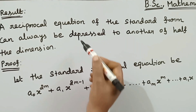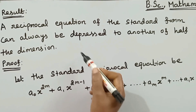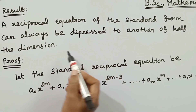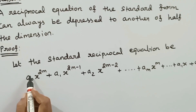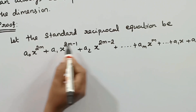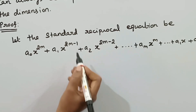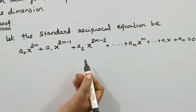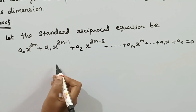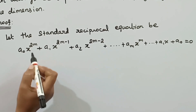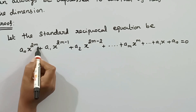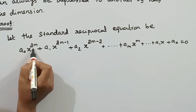The given equation is of degree 2m, and we will show the degree reduces to m — that is, half. We will now discuss and prove this statement for a standard reciprocal equation. From the previous video, the standard form of a reciprocal equation has even degree with like signs. We will discuss the case where the highest power is 2m, where 2m is an even number.